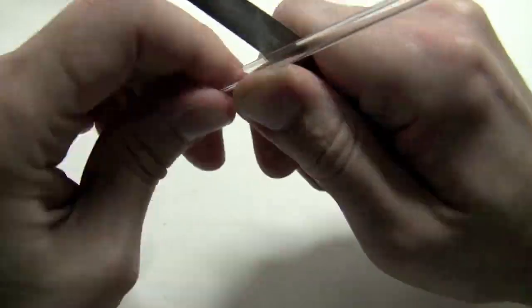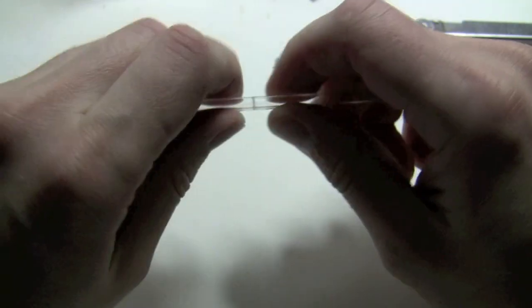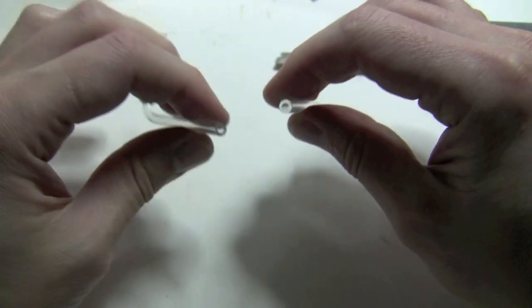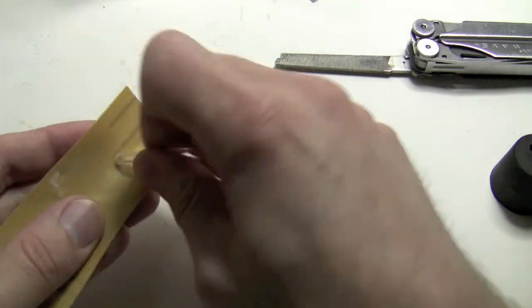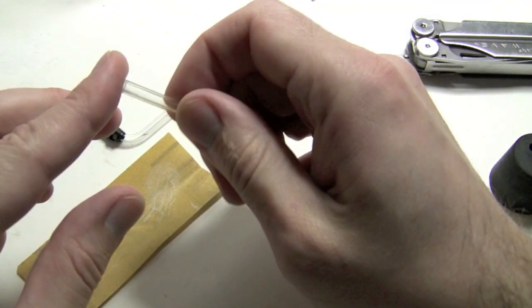Make a scratch on the glass that goes all the way around the tube, and then just snap it. The snapped tube will have rather sharp edges, so you better smooth them with a fine sanding paper.